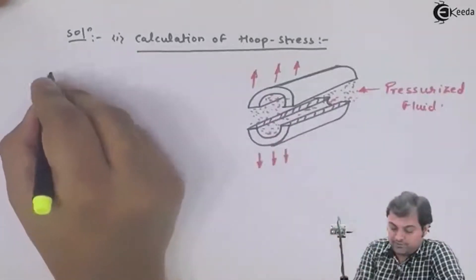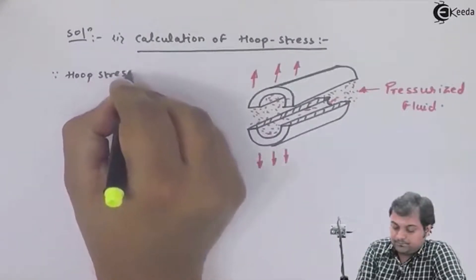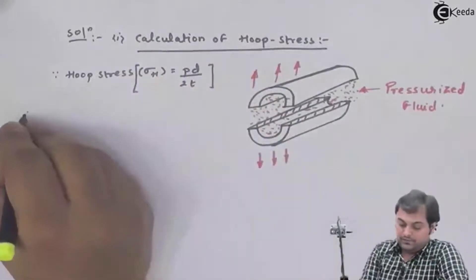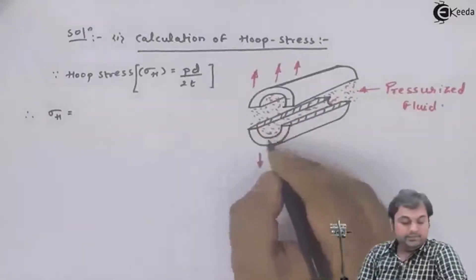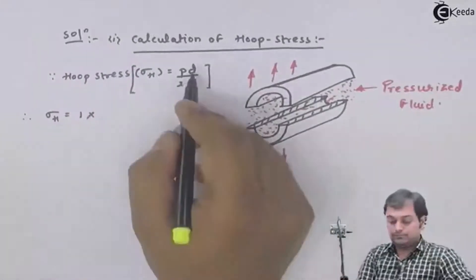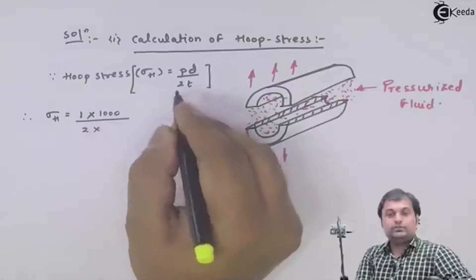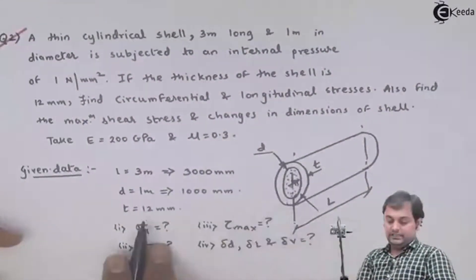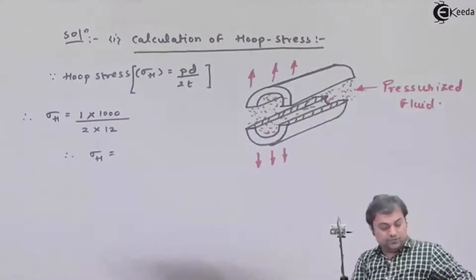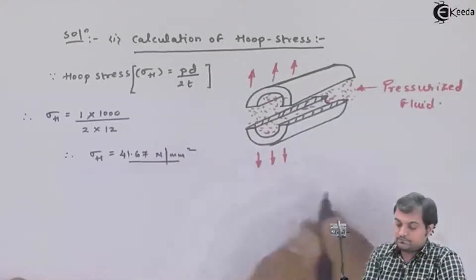Since hoop stress sigma_H is given by the formula sigma_H = pd / 2t, therefore sigma_H equals internal pressure 1 N/mm² multiplied by internal diameter 1000 mm, divided by 2 times thickness 12 mm. This gives hoop stress equal to 41.67 N/mm². This is our first answer.